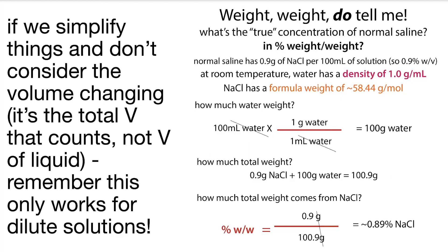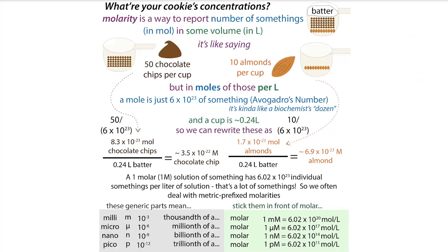Alternatively, if we say we have 100 mils total with a density of a gram per milliliter, that's 100 grams total. 0.9 divided by 100 still gives us about 0.9%. Of course, as biochemists, if we want to be really accurate, we prefer to think in terms of copy numbers — meaning molecules — and we're talking about really, really big numbers of molecules.